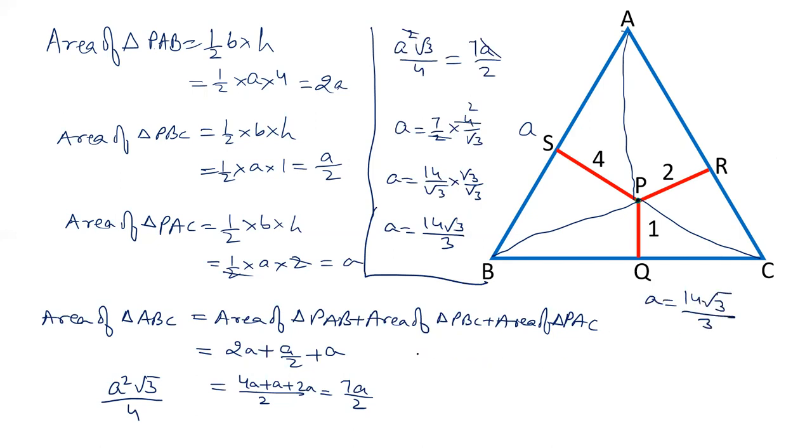And if you have to find out the area of equilateral triangle, that will be A square root 3 by 4. A will be 14 by root 3 squared, into root 3 by 4. So, that gives us 196 root 3 upon 3 into 4.